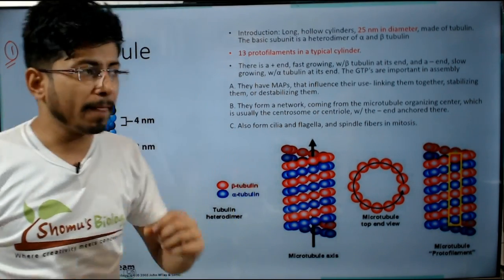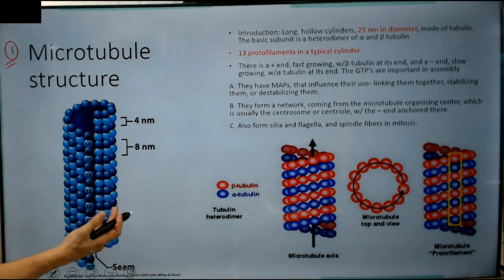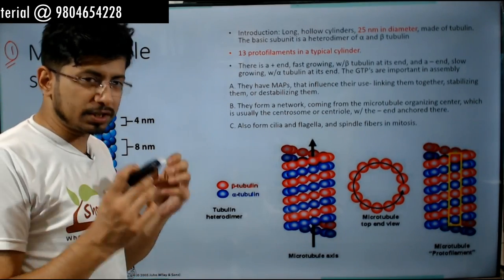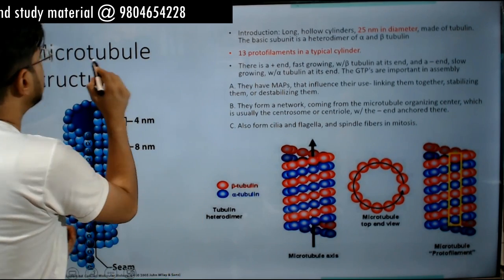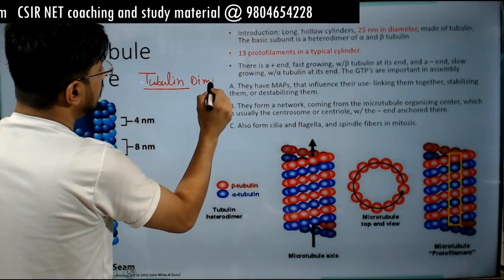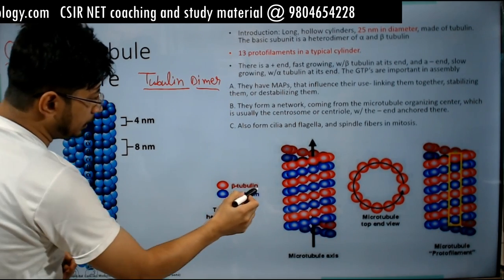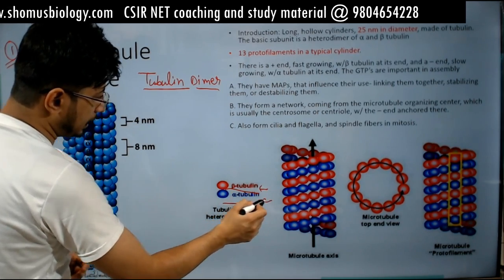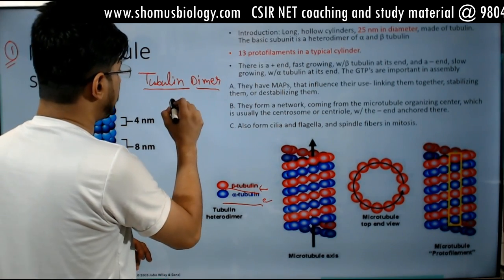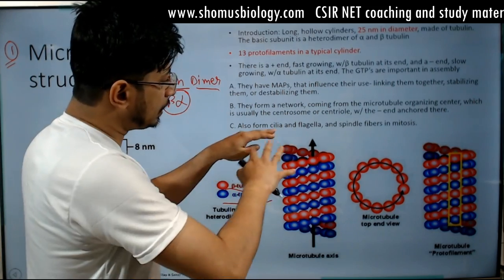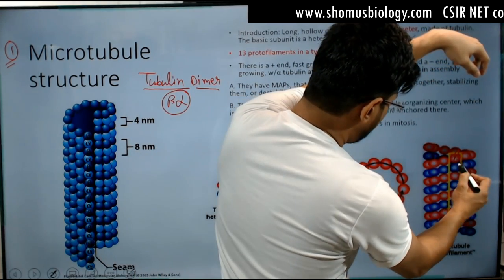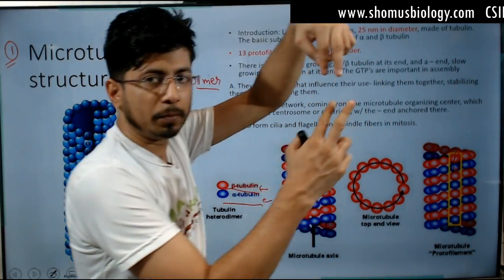What is microtubule and what is its structure? The basic constituent of microtubule is tubulin protein — specifically the tubulin dimer. There are two types of tubulin: alpha tubulin and beta tubulin. Beta is denoted with red colour and alpha is denoted with blue colour. Beta and alpha tubulin together form the tubulin dimer, and tubulin dimers are in contact with one another top to bottom, with beta on top and alpha on bottom.